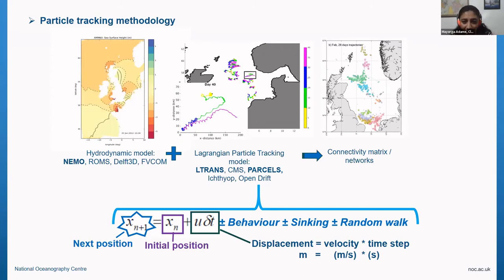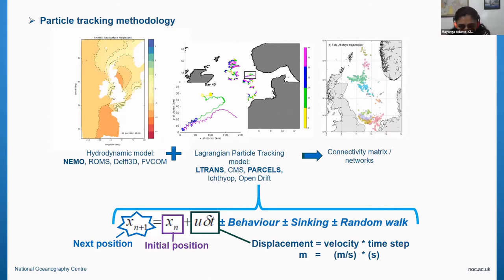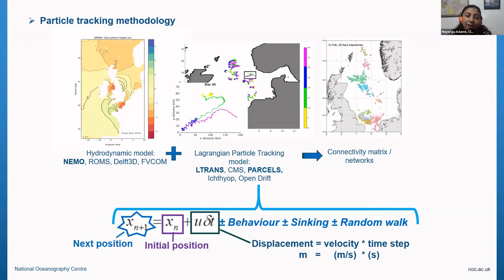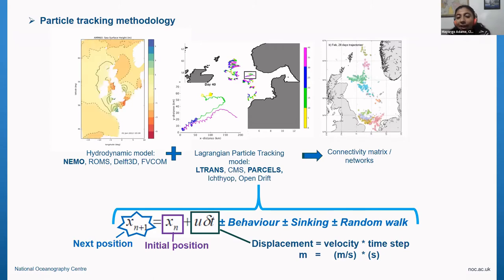Hydrodynamic models have some resolution — they have grid cells with a size and a velocity vector for each of those boxes. The Lagrangian framework is continuous in time and space, so you get velocities at every point in space and at every time just by interpolating from your hydrodynamic model. All of that small-scale movement not captured by your ocean circulation model will cause you to diffuse and go different ways, even if you start in the same location.